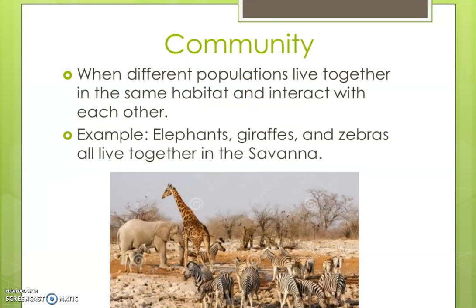What is community? When different populations live together in the same habitat and interact with each other, that is a community. Habitat is the address of any particular species where it is residing. For example, elephants, giraffe, and zebra all live together in the savannah, so savannah is the habitat of all these animals.